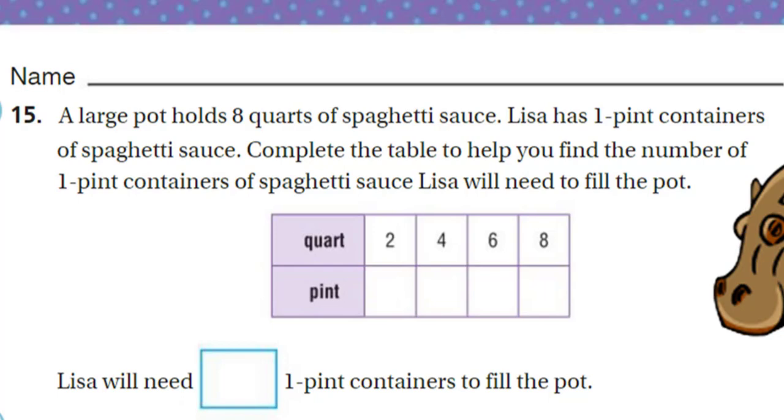Number 15 says a large pot holds 8 quarts of spaghetti sauce. Lisa has 1-pint containers of spaghetti sauce. Complete the table to help you find the number of 1-pint containers Lisa will need to fill the pot. Well, I like the chart. If we had 2 quarts here, because there's 2 pints in 1 quart, therefore 2 quarts equals 4 pints. Do you see a pattern? I can see a pattern developing really fast: 8, 12, and then 16. That makes sense because in 8 quarts you'd have 2 gallons. 16 pints. How many would you need? 16. This one was an easy one.